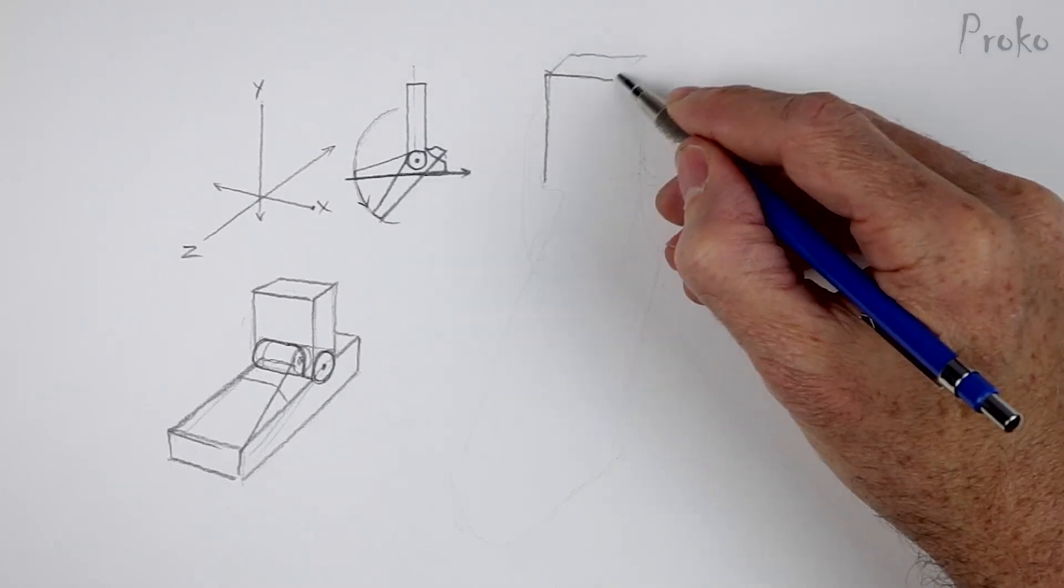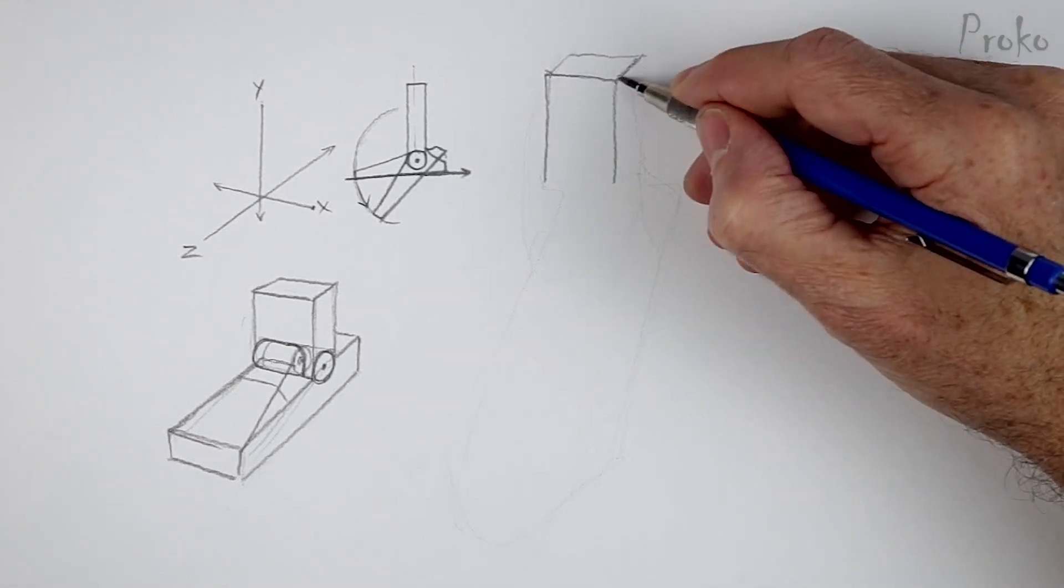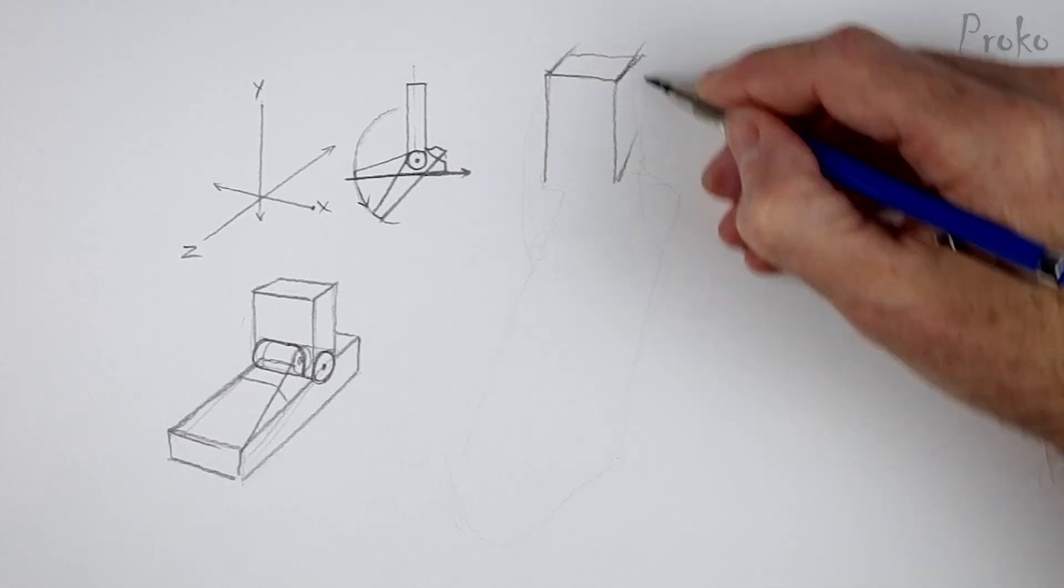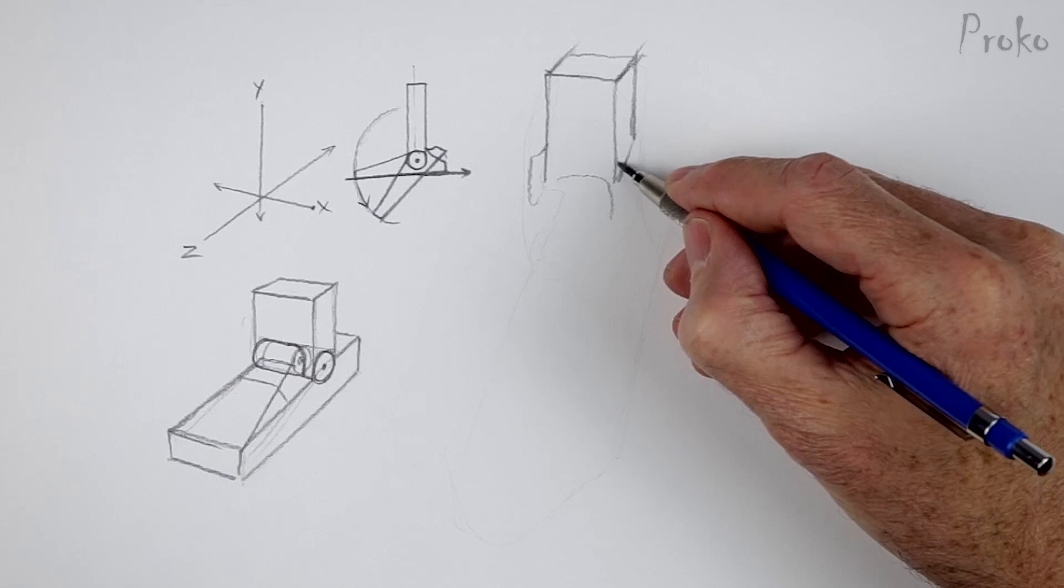So let's get the ankle bones. That would be the tibia and the fibula. And they come down kind of like a wrench to grip that spool bone of the talus.